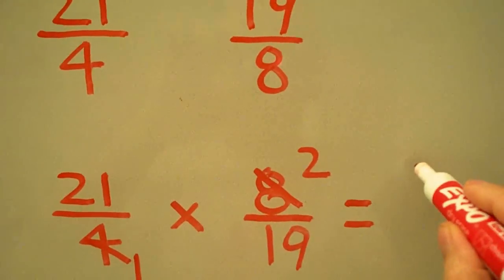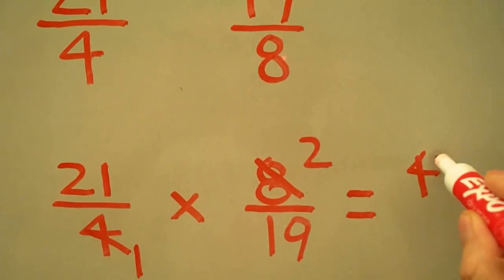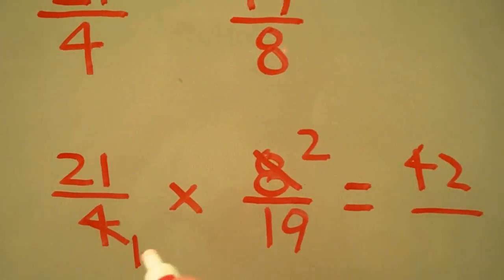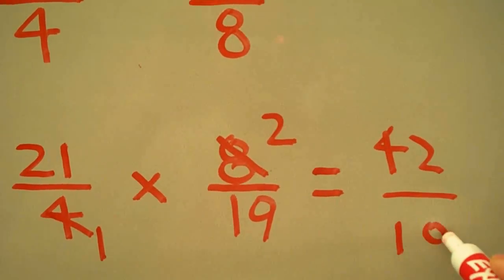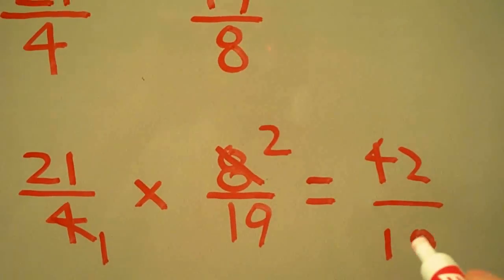21 times 2 is 42, 1 times 19 is 19, and we get an answer of 42/19.